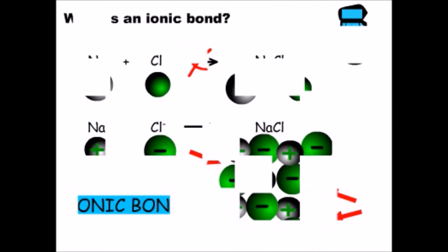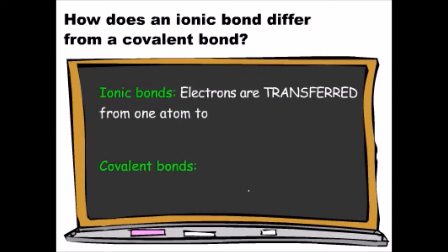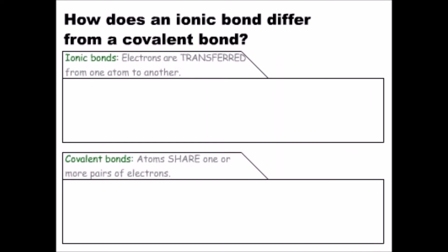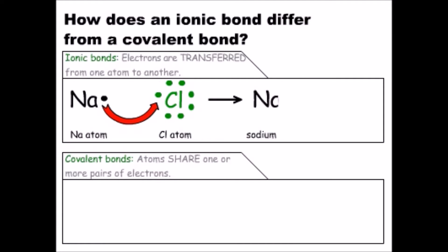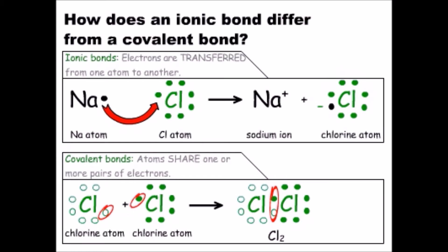Now we're ready to figure out how ionic bonds are different from covalent bonds. The basic difference is that electrons are transferred from one atom to another in an ionic bond, but in a covalent bond, two atoms share one or more pairs of electrons. In the ionic compound sodium chloride, an electron from sodium is transferred to chlorine to produce sodium and chloride ions. Chlorine can also form covalent bonds — two chlorine atoms, having seven valence electrons apiece, each donate one electron to form a pair of electrons shared by the two atoms. This shared pair of electrons is called a covalent bond.